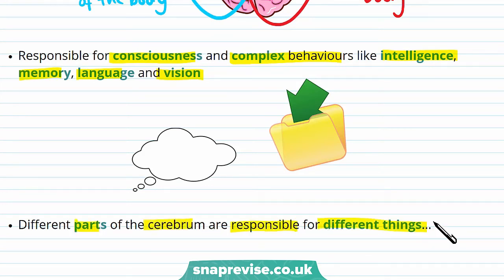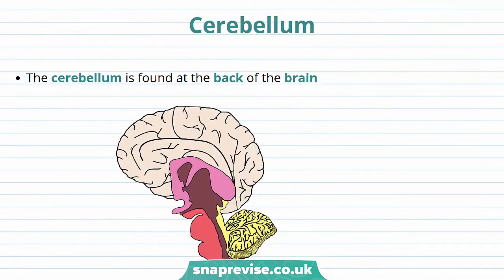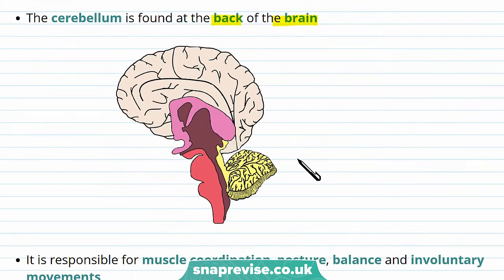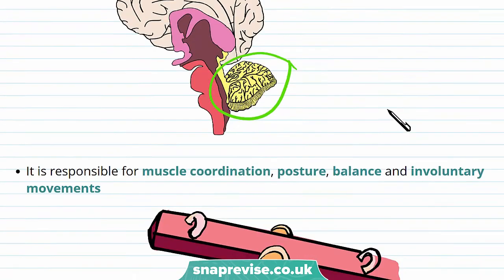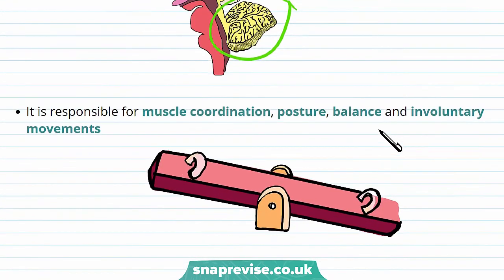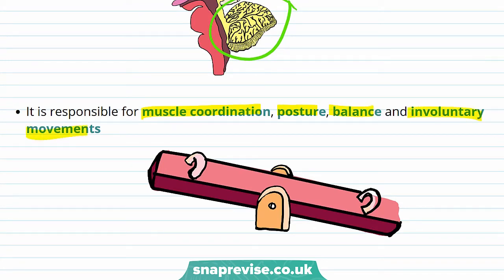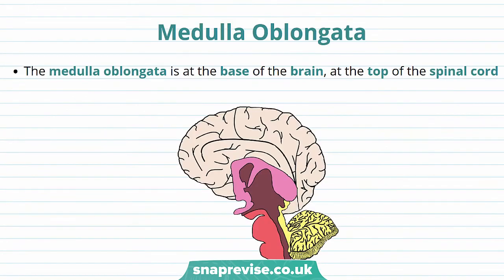Now let's talk about another part of the brain: the cerebellum. The cerebellum is found at the back of the brain — it's this structure here. The cerebellum is really important because it's responsible for muscle coordination, posture, balance, and involuntary movements. It's what allows you to do things like run.